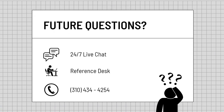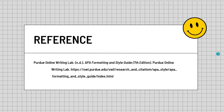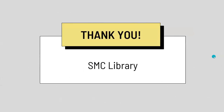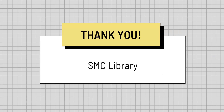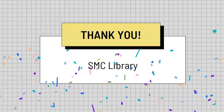If you ever have any future questions, there are a number of ways you can reach a librarian. You can use the 24/7 live chat on the library website to chat with a librarian at any time. You can also reach us at the reference desk, which is always staffed by a librarian. And you can also reach us via phone. Here's my reference page for the resource I used to put this presentation together. If you're watching this workshop for extra credit, the code word is 'flower pot.' Thank you everyone for attending this workshop.